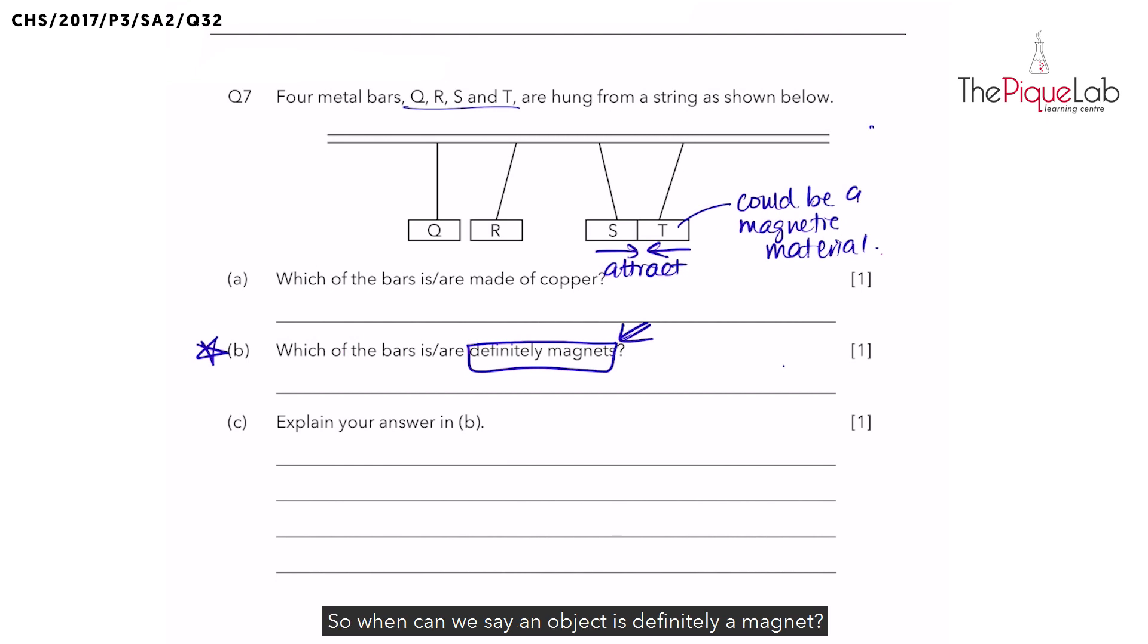So when can we say an object is definitely a magnet? When we observe repulsion. So what do we need to look out for when we want to confirm something is definitely a magnet? We need to look out for repulsion. Now, why repulsion? Because only magnets with like poles facing each other can repel.